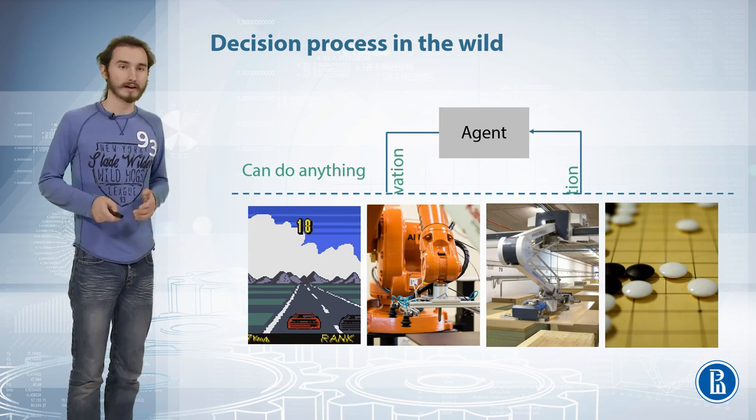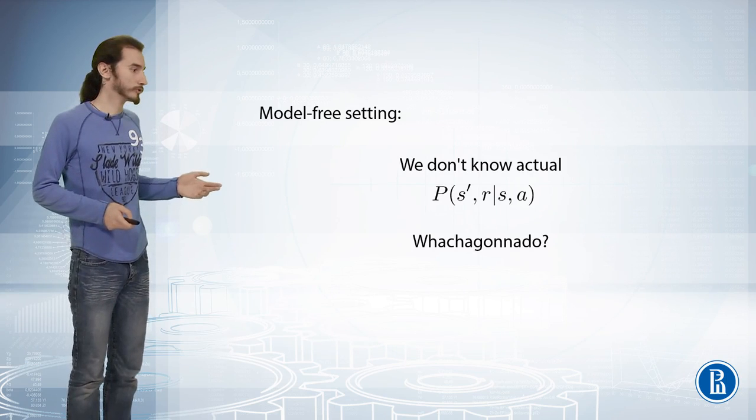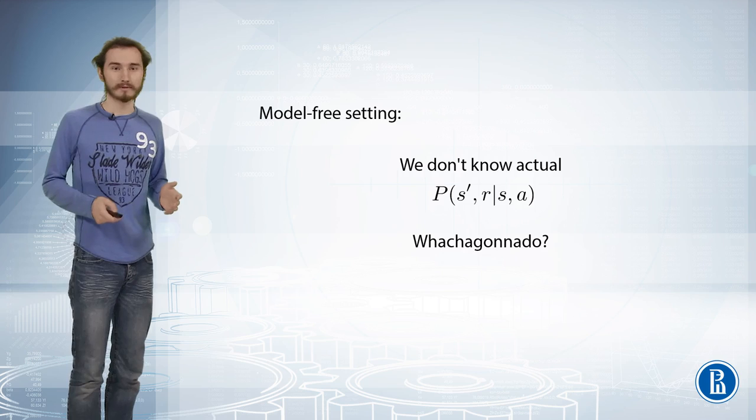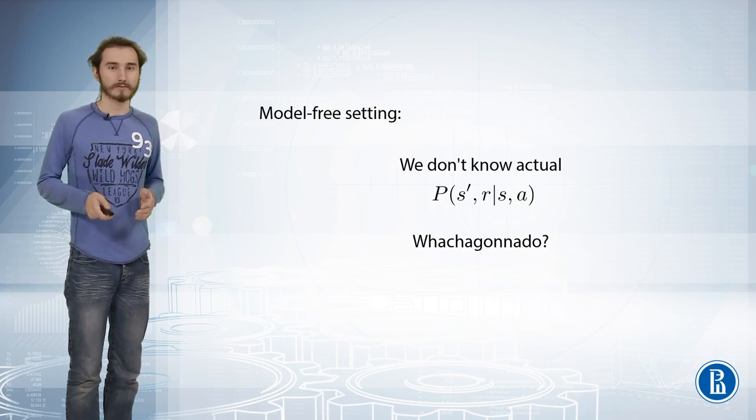So the first problem that arises here, and actually a huge problem, is that you no longer have access to the state transition probability distribution, or the reward function as well. You can sample states and rewards from the environment, but you don't know the exact probabilities of them occurring.